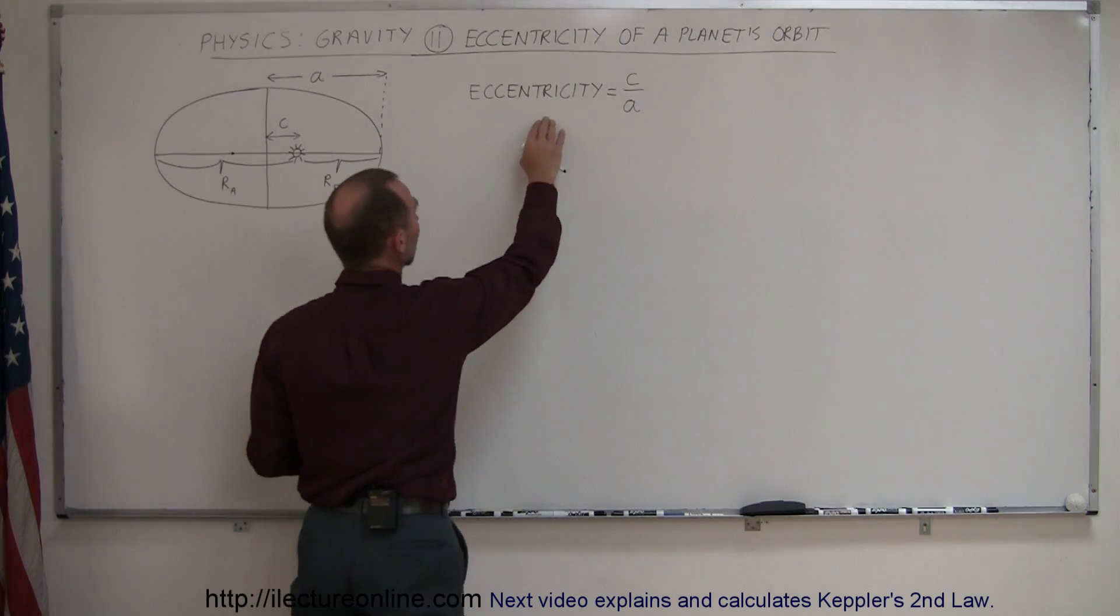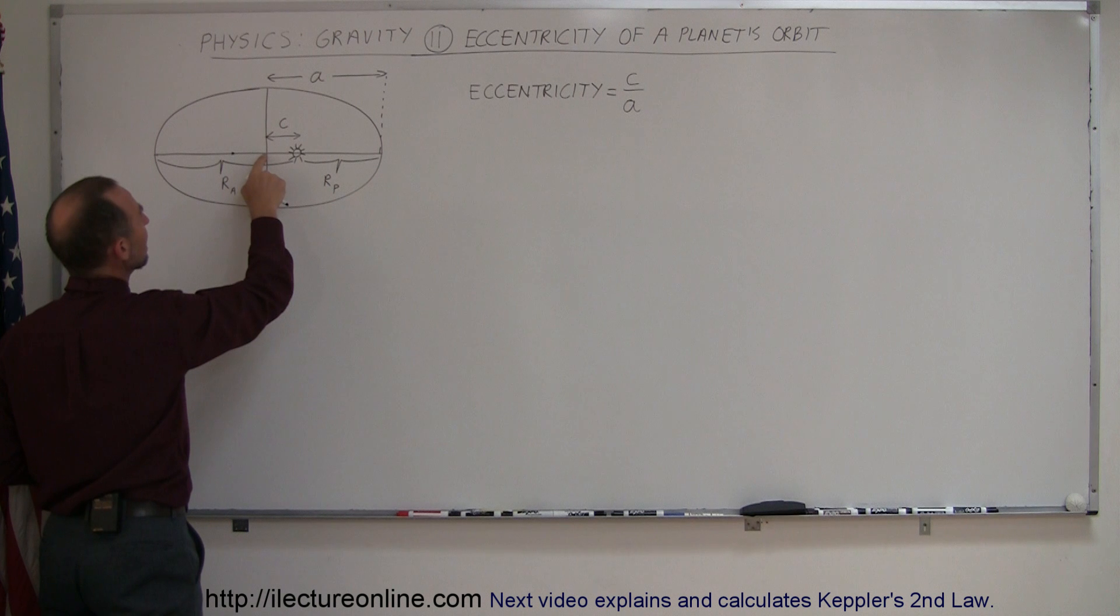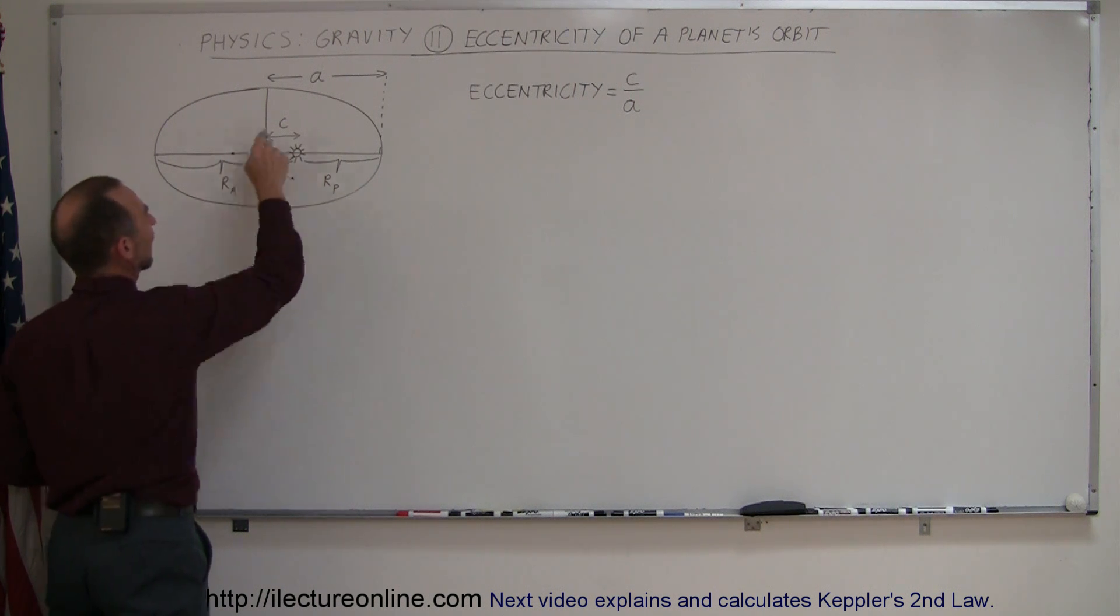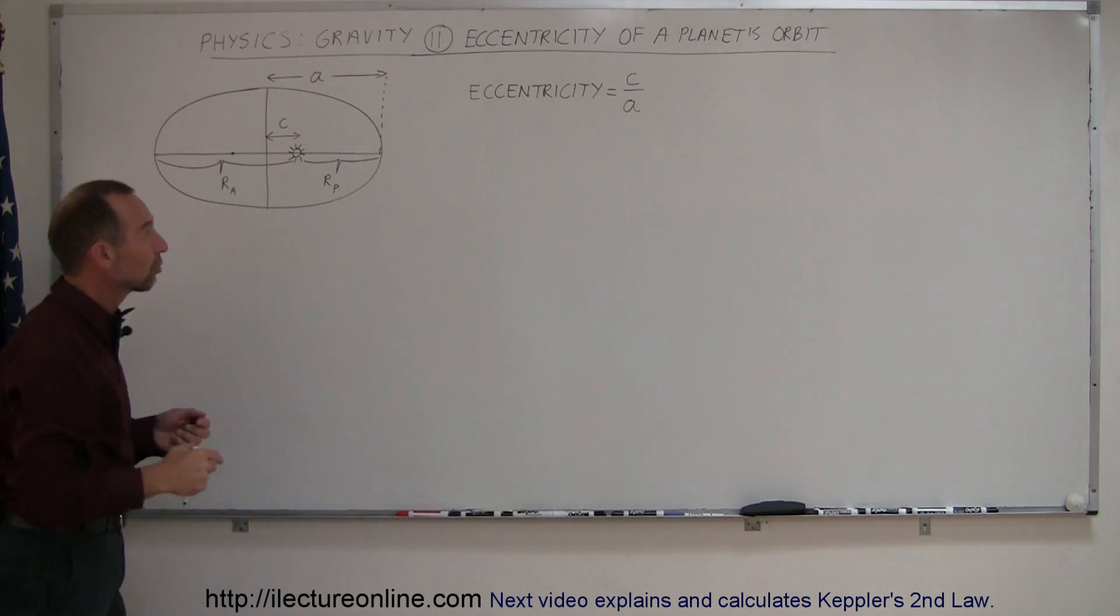The definition of eccentricity is c over a. Now remember that c was the distance from the central point of the orbit to where one of the foci is, in this case where the sun is. And a would be the semi-major axis, so that ratio would be the eccentricity of the orbit.